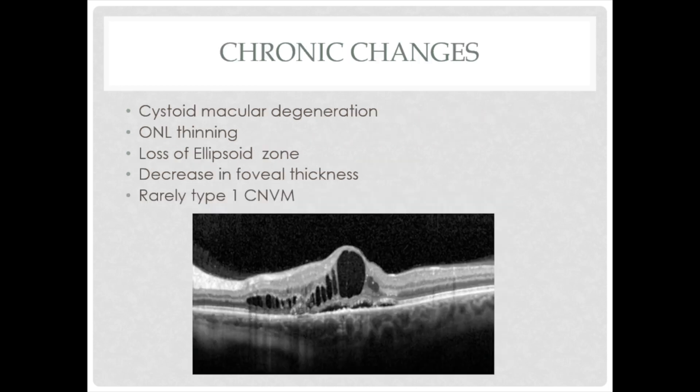Chronic changes in chronic CSCR include cystoid macular degeneration, outer nuclear layer thinning, loss of the ellipsoid zone or complete decrease in foveal thickness, and very rarely a type 1 CNVM can be seen.